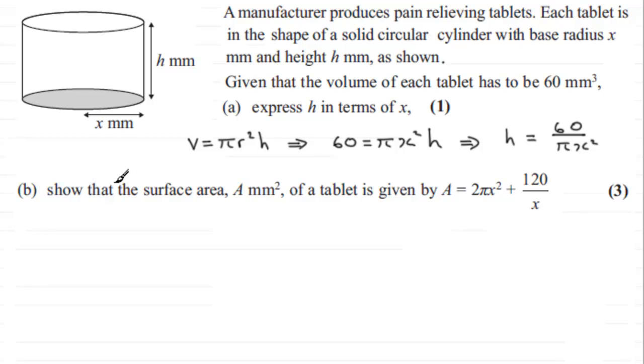Now in part B, we've got to show that the surface area A of the base square millimeters of the tablet is given by this formula here. So you can see that this formula hasn't got h in at all, so at some point we're going to have to make a substitution for h of 60 over πx².